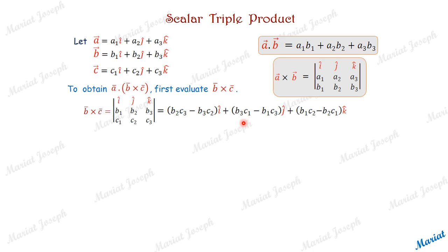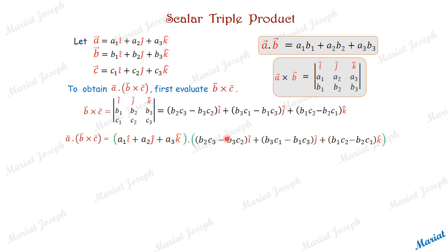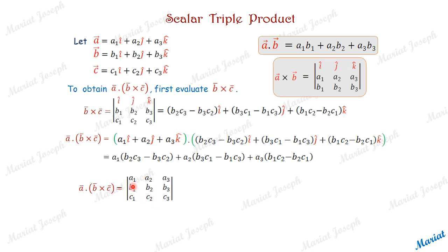B cross C is the determinant with rows i j k, B1 B2 B3, C1 C2 C3. Expanding gives three terms. Then A dot (B cross C) is vector A dotted with this expanded B cross C vector, multiplying components: A1 times the first bracket plus A2 times the second bracket plus A3 times the third bracket. We observe that this result is nothing but the expansion of the 3×3 determinant with rows A1 A2 A3, B1 B2 B3, C1 C2 C3. So if three vectors are given in component form, we can calculate the scalar triple product simply by evaluating that determinant.